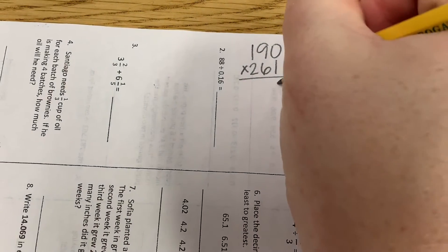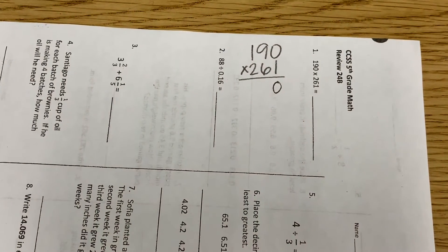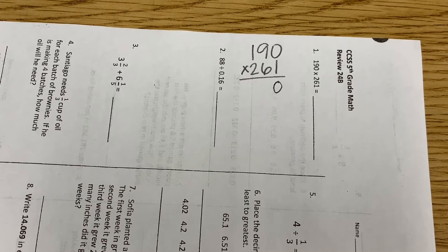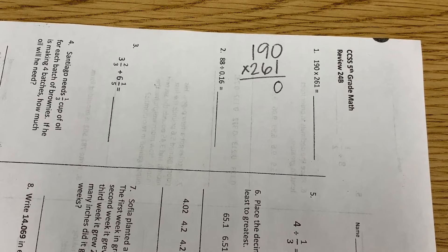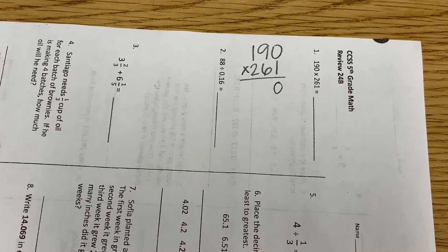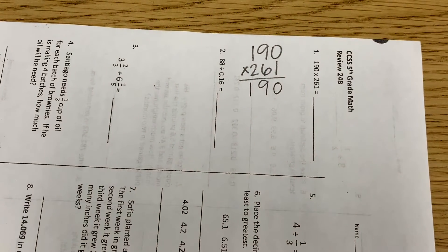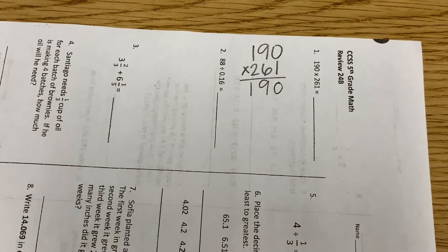So one times zero is zero. Okay, then one times nine is nine, and one times one is one. Okay, now I need somebody to tell me what I need to do next, Emma.